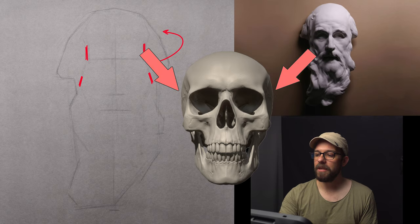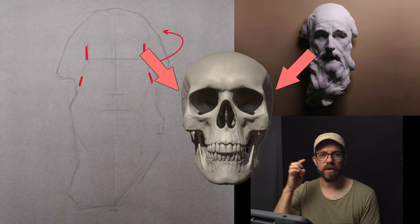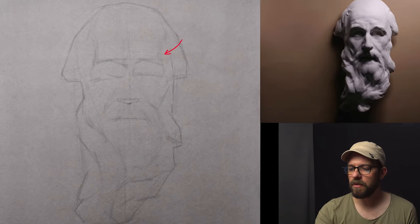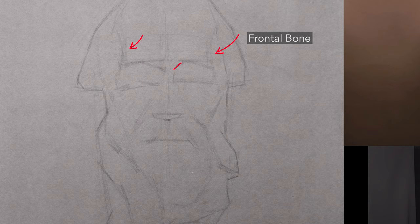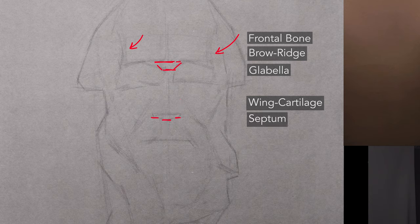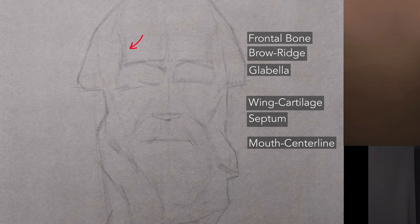We can still see the holdovers — the edges of the frontal bone. I have started to indicate the glabella breaking away from the brow ridge. You can also see with the nose that I've started to indicate the divergence between the height of the wing cartilage and the height of the septum where it contacts the front plane of the face. I've also started to indicate the left and right extremities of that horizontal center line of the mouth. All of these things are perpetuating into a later stage.